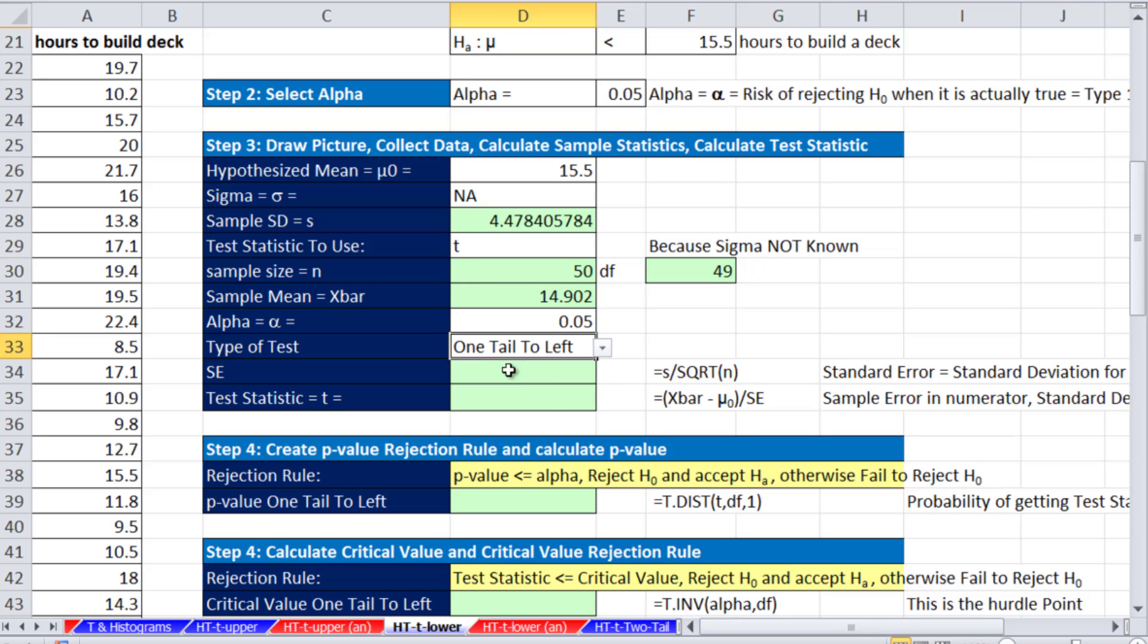We have to calculate our standard error. We don't have sigma, so we use S divided by the square root of our N. And then our ever important test statistic. This is the T distribution, so we're actually calculating a T. We take X bar minus our hypothesized mean divided by the standard error. So almost minus one standard deviation.